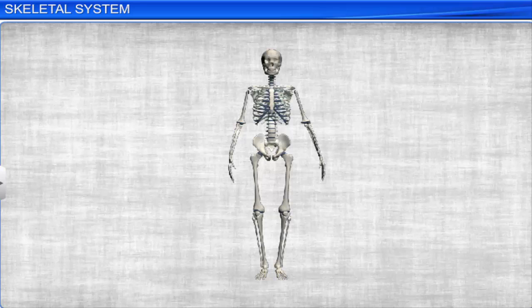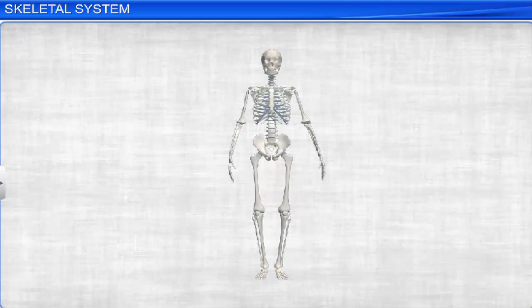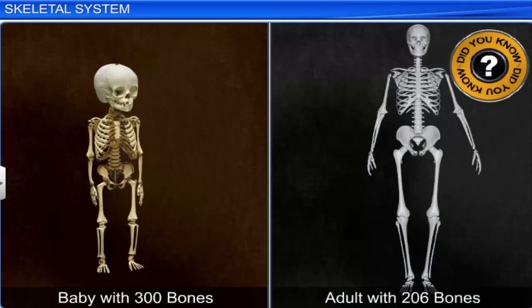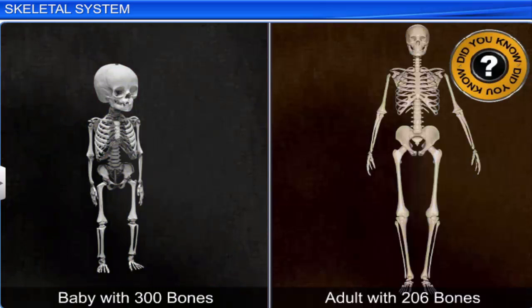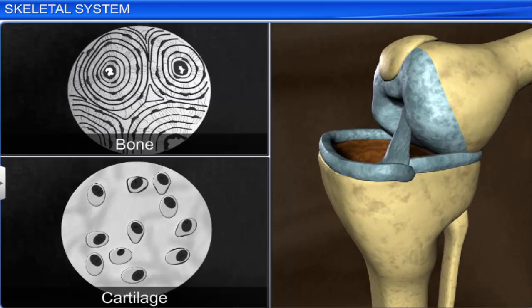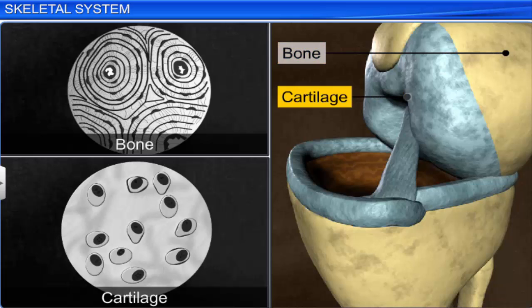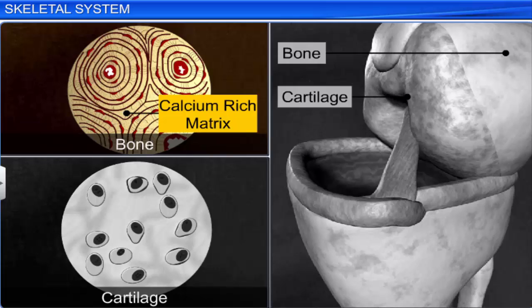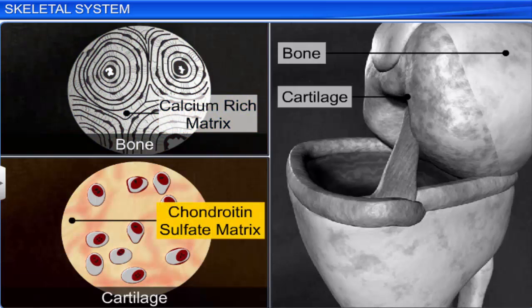The adult skeletal system consists of 206 bones and a few cartilages. Did you know that a newborn baby has around 300 bones, which fuse as the baby grows, resulting in 206 bones in an adult? Both bone and cartilage are specialized connective tissues. However, bone has a hard non-pliable matrix due to the presence of rich calcium salts, while cartilage has a pliable matrix due to chondroitin salts.